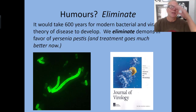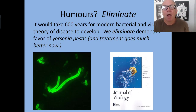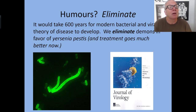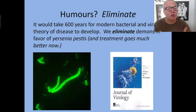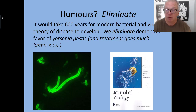What did we do in the case of humors? We eliminated. It took 600 more years for modern bacterial and viral theory of disease to develop. We eliminated demon possession and the four humors in favor of an account that says it's a particular kind of bacterial infection — Yersinia pestis — that causes bubonic plague. The conceptual framework wasn't even in place for another 600 years for us to correctly describe it. Now when somebody gets bubonic plague, we know exactly what it is and treat it with antibiotics — which goes much better than getting your astrology forecast.